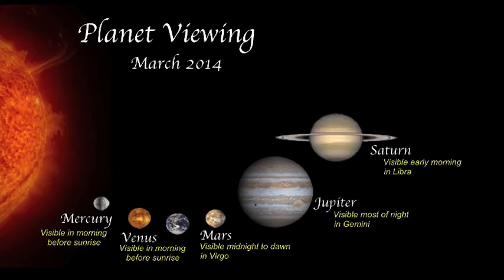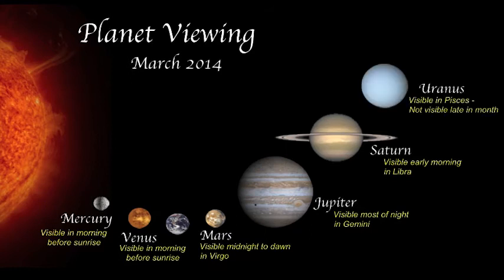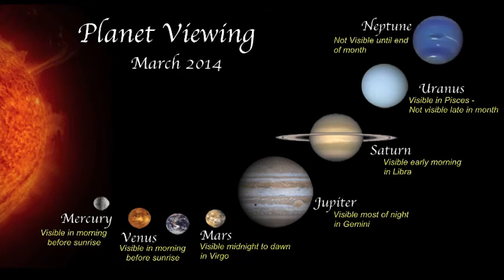Saturn appears east of Mars in the constellation Libra rising just after midnight. Uranus is in Pisces, and is visible just after sunset, the first part of the month, sinking lower until it is not visible around mid-month. Neptune is not visible most of this month. It appears again just before sunrise, late in the month.